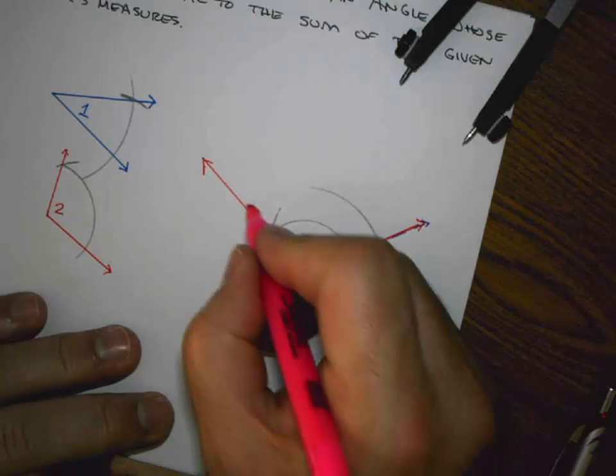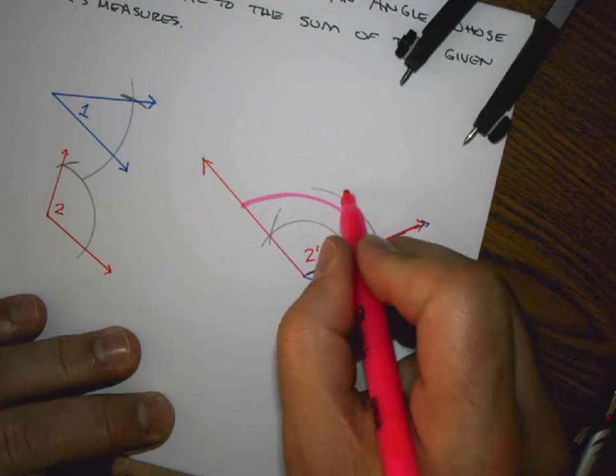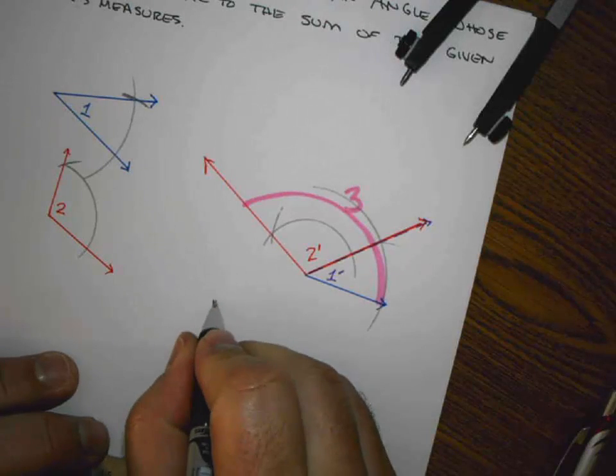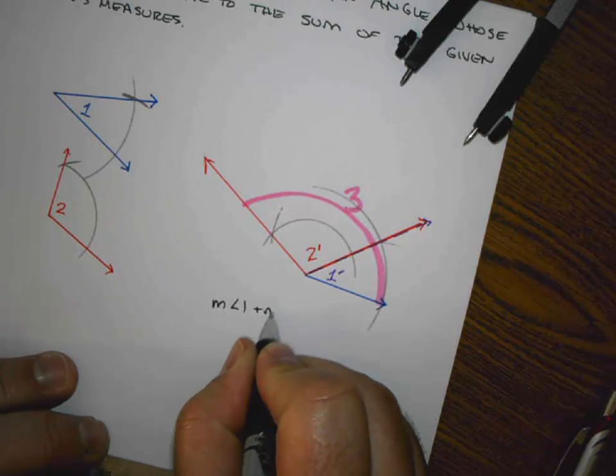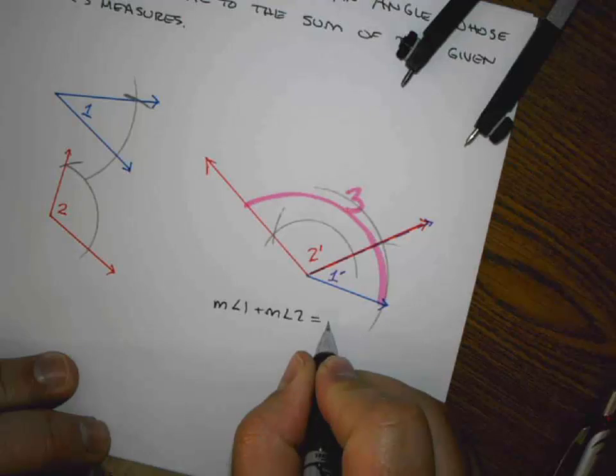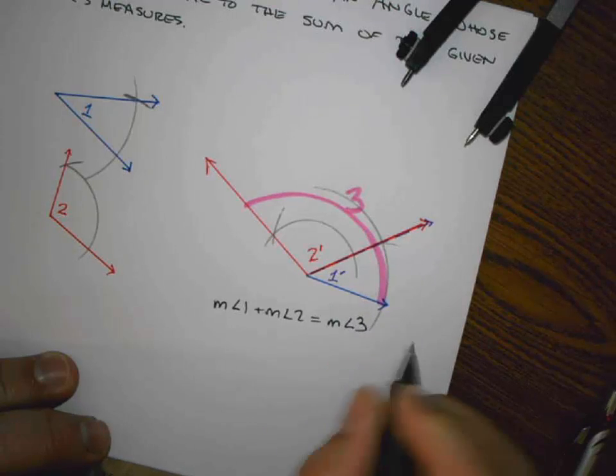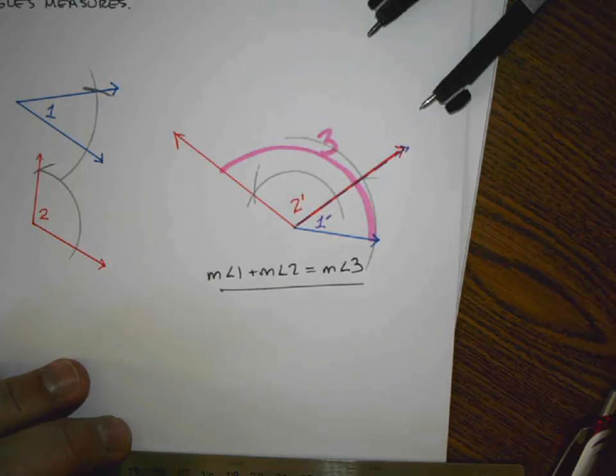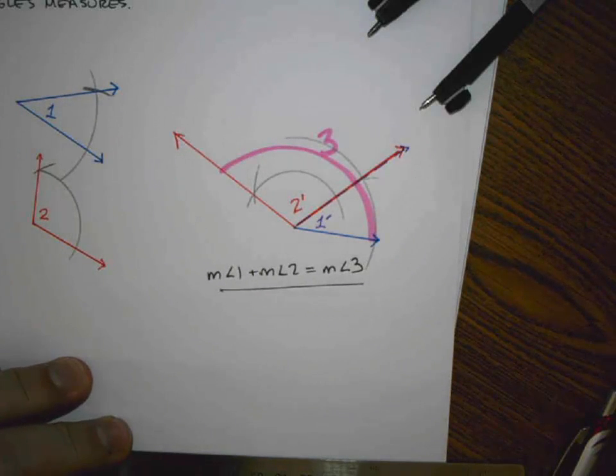And if we call this angle 3, we can say that the measure of angle 1 plus the measure of angle 2 is equal to the measure of angle 3. As intended, effectively we've produced a construction of the angle addition postulate. Thanks. See you next lesson.